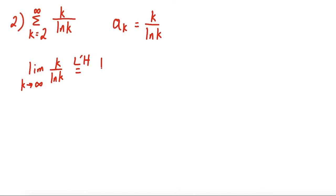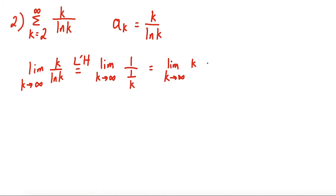To apply L'Hôpital's rule, we take the derivative of the numerator — the derivative of k is 1 — divided by the derivative of the denominator, natural log k, which is 1 over k. Rearranging, the limit as k goes to infinity of 1 divided by 1 over k simplifies to the limit as k goes to infinity of k, which heads towards infinity. Since this is heading towards infinity, the limit is non-zero, and therefore the series diverges.